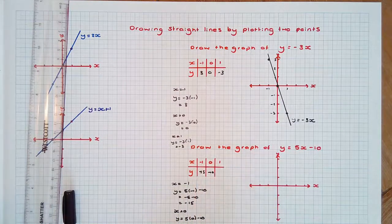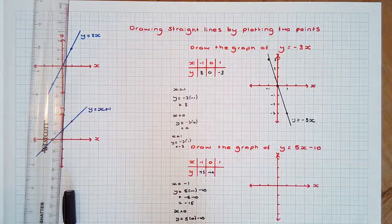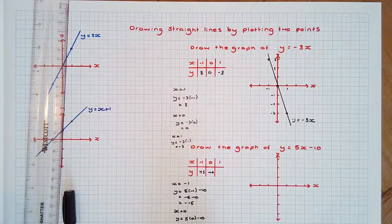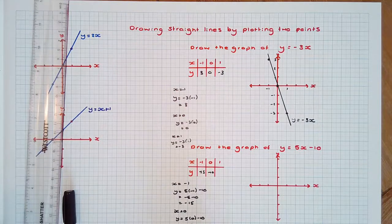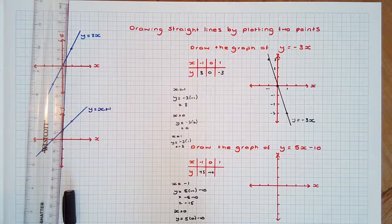And when x equals 1, y equals 5 times 1 minus 10, which is 5 minus 10, which is negative 5.